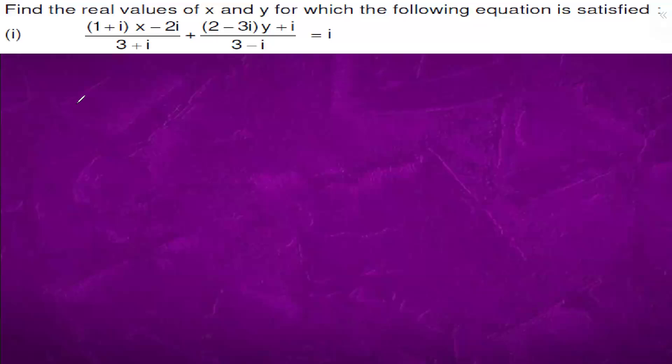So here we have 3 plus iota in the denominator, 3 minus iota in the denominator. So to each term, we will multiply with 3 plus iota, 3 minus iota.